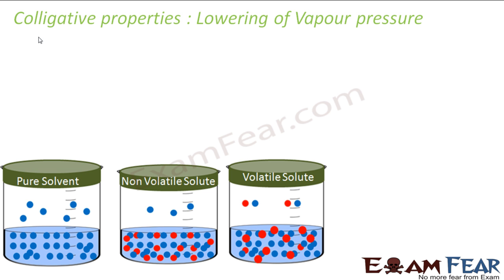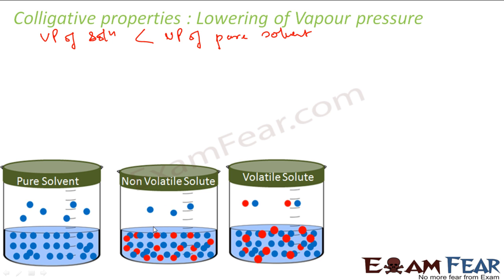It is a known fact that the vapor pressure of a solution is always less than the vapor pressure of the pure solvent. Looking at this diagram: this is my pure solvent with six molecules at the surface, and the vapor pressure is due to those six molecules. But the moment I add a non-volatile solute, the solute also occupies the surface and tries to bind the solvent molecules. The B molecules bind with A molecules, so very few molecules of A escape out.